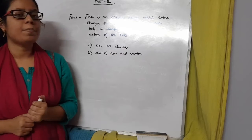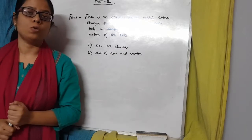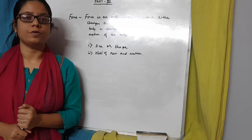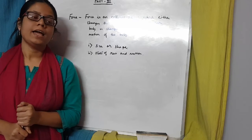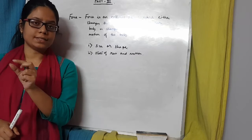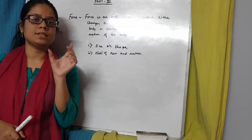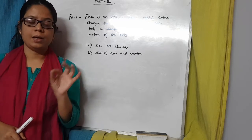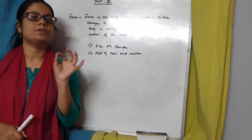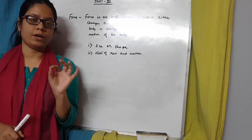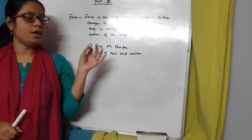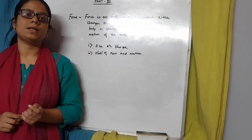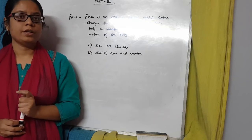In the size and shape part, there is one important thing to note: the size and shape of a body will change only if the body is not rigid. If the interparticle spaces of the object can be changed, the body is called non-rigid. If the intermolecular space cannot be changed, that body is called a rigid body. So only if a body is non-rigid can force cause a change in its size and shape.